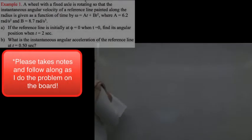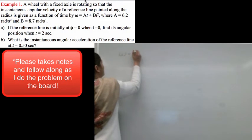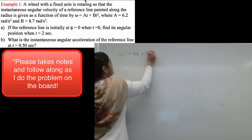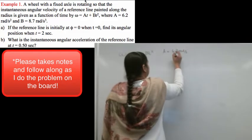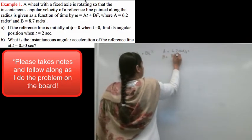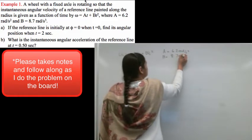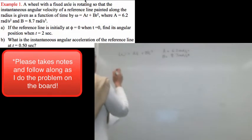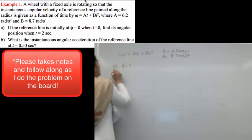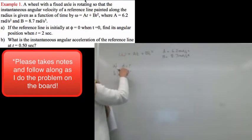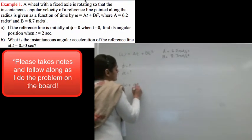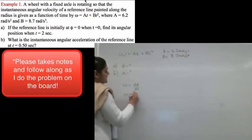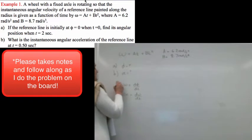The question gives us that angular velocity ω = at + bt², with a = 6.2 radians per second squared and b = 8.7 radians per second cubed. We need to find: (a) the angular displacement φ, and (b) α, the angular acceleration. The key relationships are ω = dφ/dt and α = dω/dt, which will be very useful here.